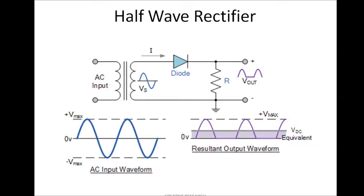In single phase uncontrolled rectifiers, we basically deal with four diodes. Single phase uncontrolled rectifiers are divided into half wave and full wave rectifiers. In a half wave rectifier, we connect a single diode. The AC input goes through a step-down transformer, giving us a lower voltage. We then convert the AC input to a half wave — meaning we convert only half of the wave to DC. You get a constant voltage only at a particular half cycle.